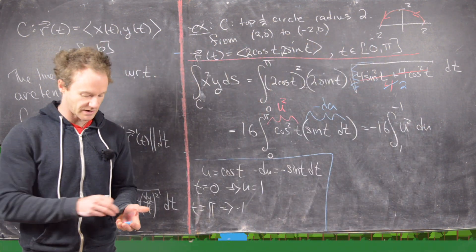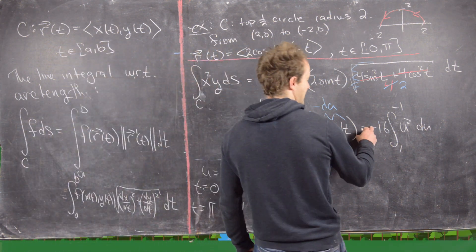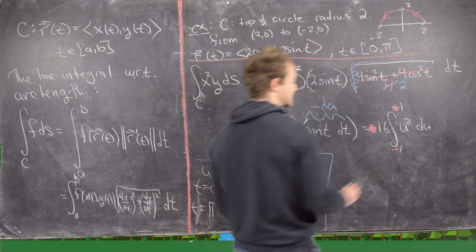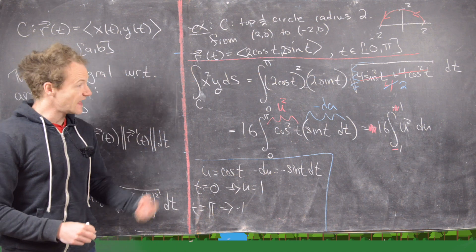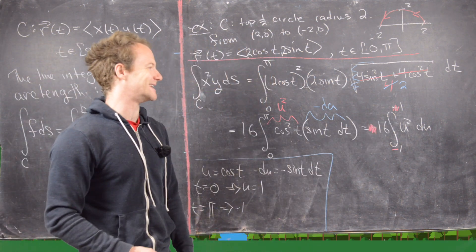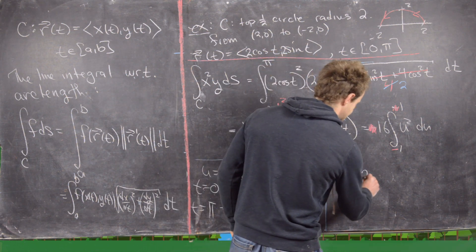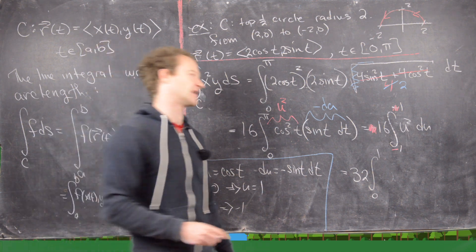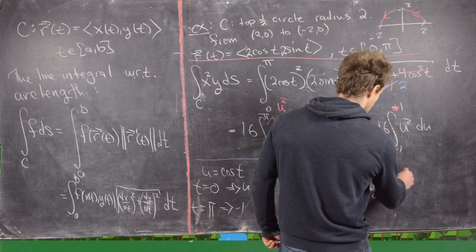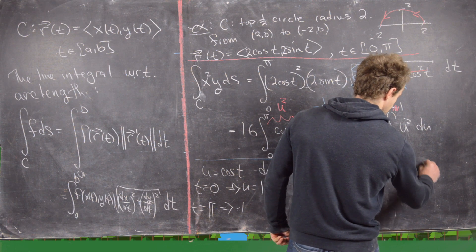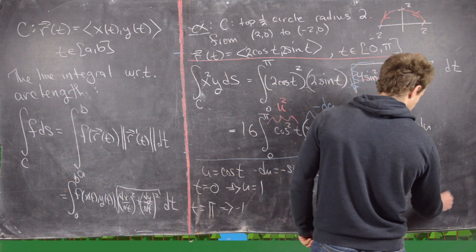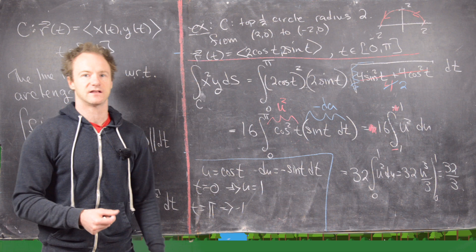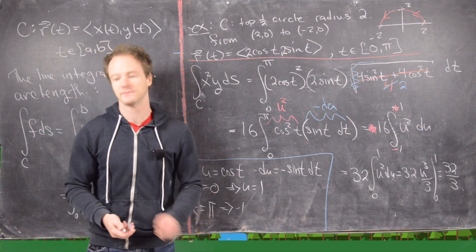Bringing out the minus sign flips the bounds: we get −16 times the integral from 1 to −1 of U² dU, which equals 16 times the integral from −1 to 1 of U² dU. Since U² is an even function, this doubles to 32 times the integral from 0 to 1 of U² dU. That gives 32 times [U³/3] from 0 to 1, which equals 32/3. That's the final answer.